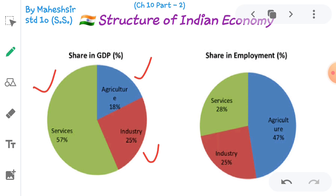Third is the Service Sector. Different types of services are included in this section — services like trade, communication, airways, waterways, education, health, banking and insurance, tourism and entertainment are included in this sector.